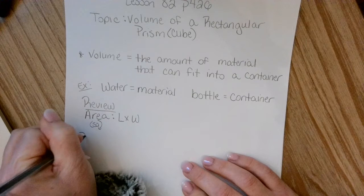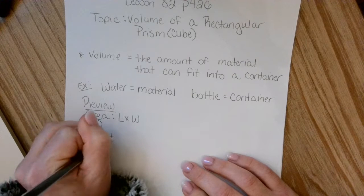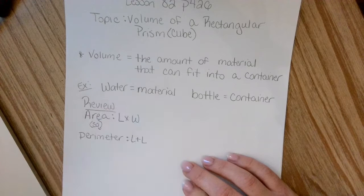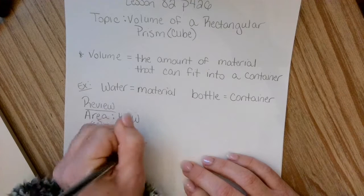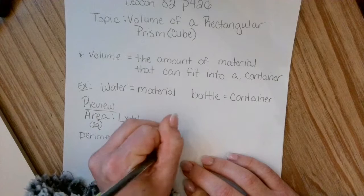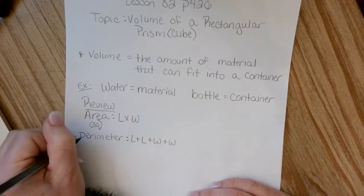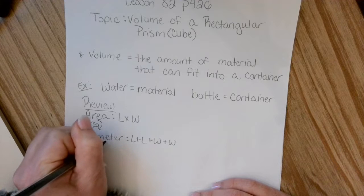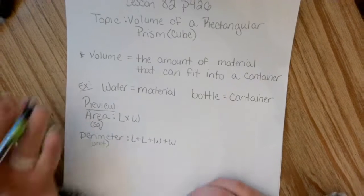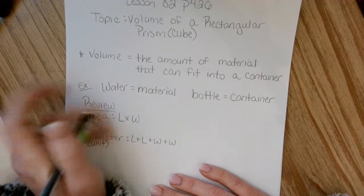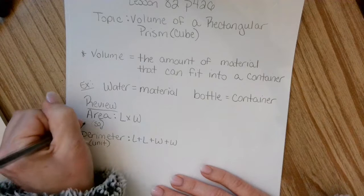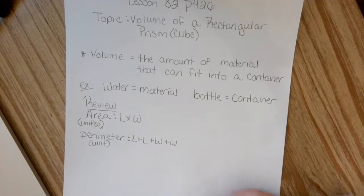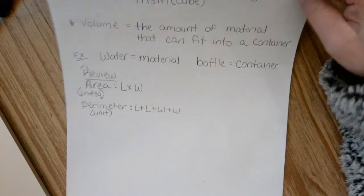And then perimeter, if you remember that, we have to add length plus length plus width plus width. So we are adding up all the sides. And then we don't have the little square on our unit there. We just have units. So unit square would be area. Perimeter would be just the units listed.